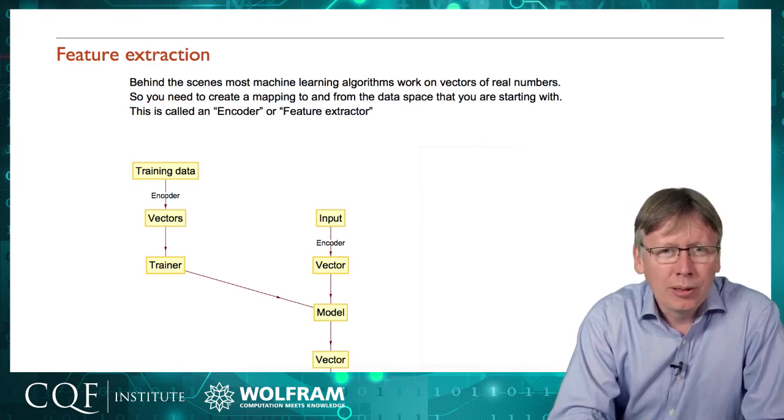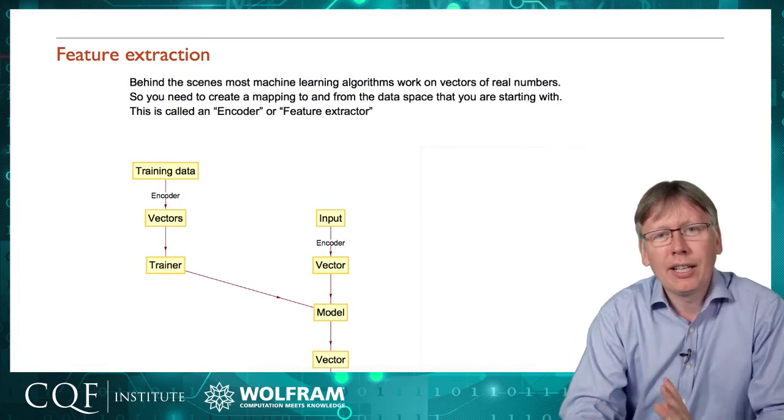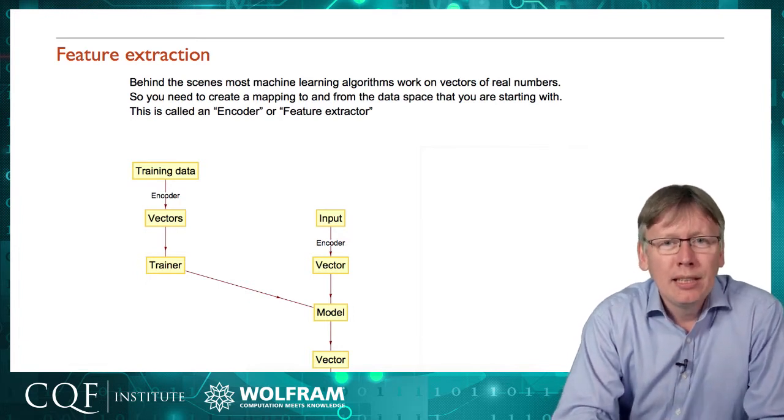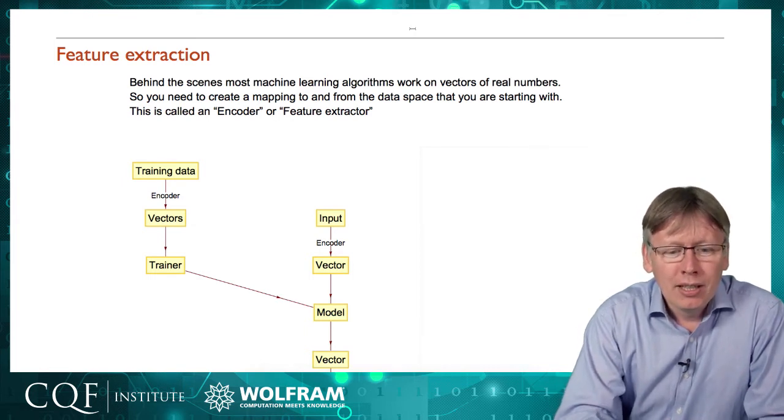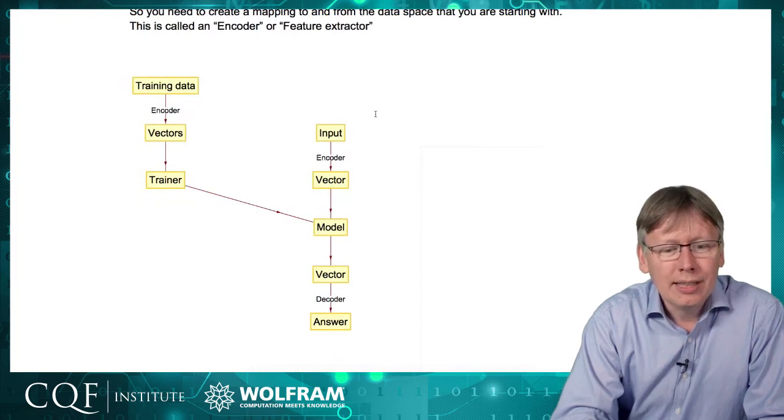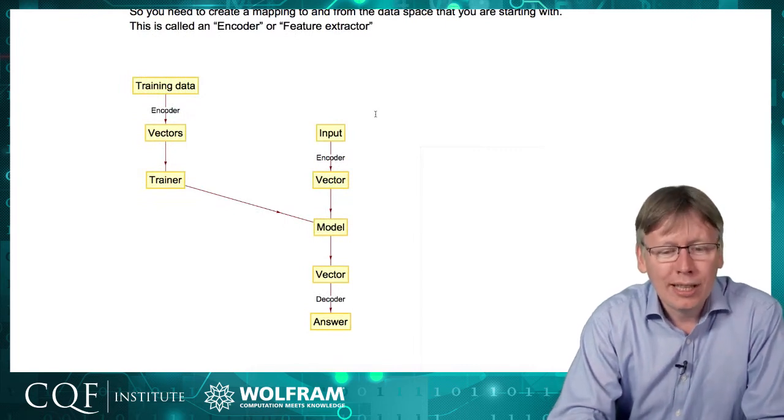All of the methods that we've talked about essentially work on numbers. The fact that I could give it pictures or strings or other kinds of input is all just part of the automation.